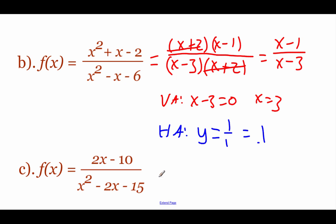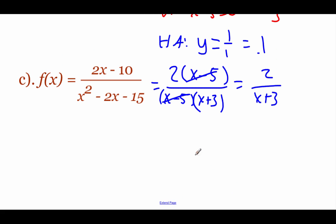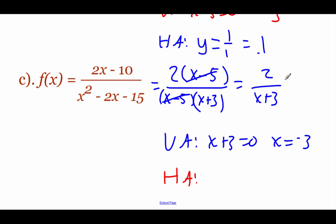For the last function, we can reduce again. Factoring the top gives two times x minus five; factoring the bottom gives x minus five times x plus three. The x minus five cancels, leaving two over x plus three. Finding the vertical asymptote: set x plus three equal to zero, so x equals negative three. For the horizontal asymptote: the highest power on top is zero (no x), and on the bottom it's one. Since the power on top is less than the power on bottom, the horizontal asymptote is automatically y equals zero.